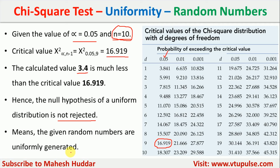In this video, we applied the chi-square test to test whether a given set of random numbers are uniformly distributed or not. I hope the concept is clear. If you like the video, do like and share it with your friends. Press the subscribe button for more videos and the bell icon for regular updates. Thank you for watching.